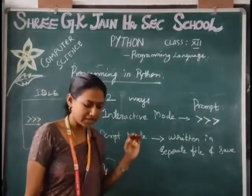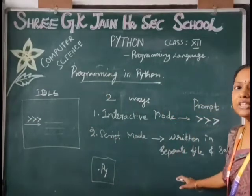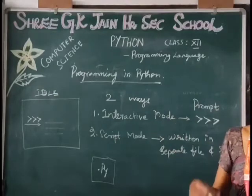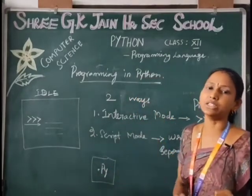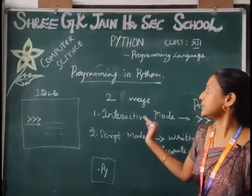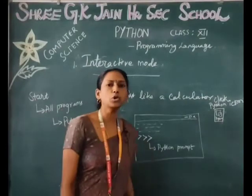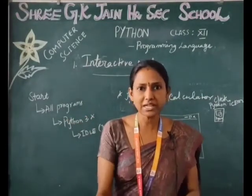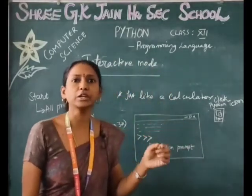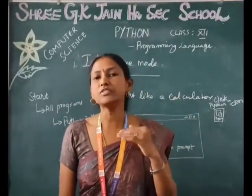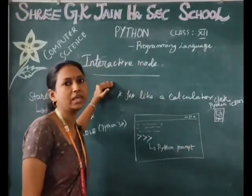In script mode, you write your program in a file, then compile the file, and you will see the output in the IDLE window. These are the two methods of writing a Python program. Interactive mode means it interacts with you immediately — it gives you the output immediately, just like a calculator. For example, if you type 5 plus 2, it will give you the result immediately.